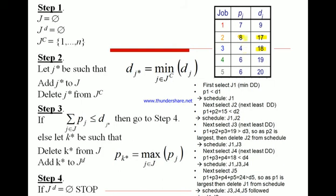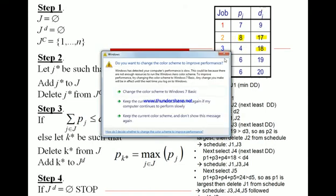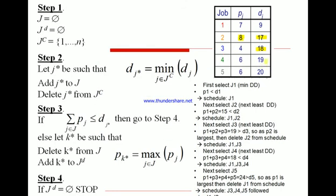What we do here is job two has the largest processing time, so we move job two from the sequence. So far we do job one and job three. Then the next least due date is job four, which is 19.